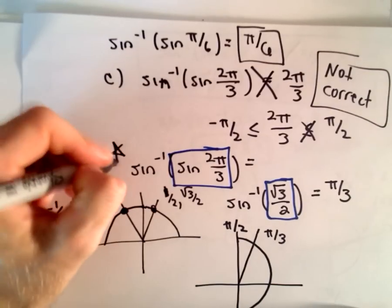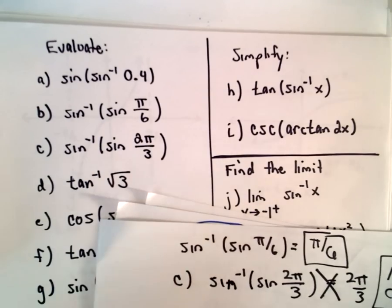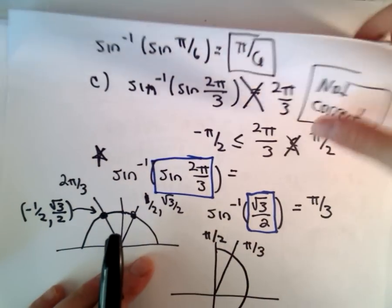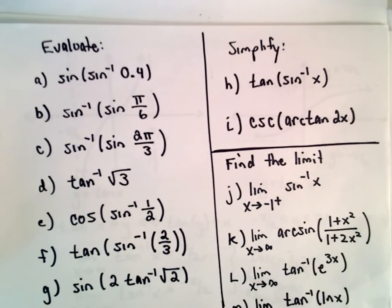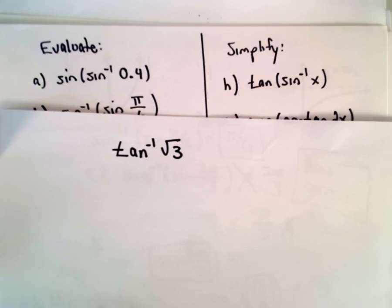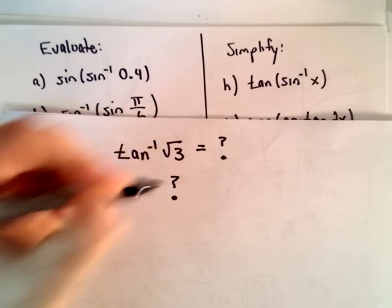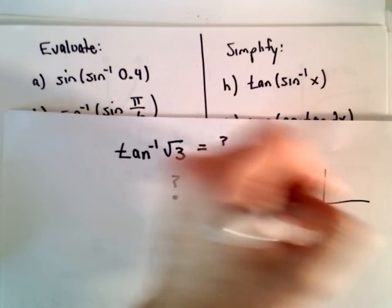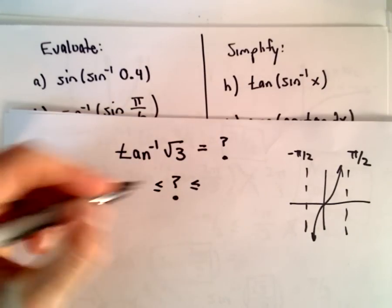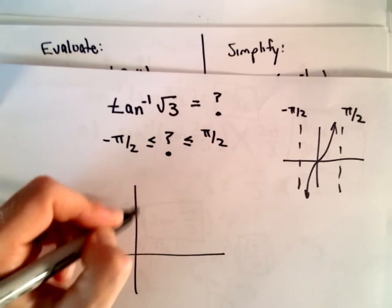This is the example to be extra careful about — you can't just apply cancellation laws thoughtlessly. You have to be careful about the domain. Now let's do one last example: arctangent, or inverse tangent, of square root of 3. There are only a handful of values I can do without a calculator, and it comes down to unit circle stuff. Based on the restriction for tangent, our solution has to lie between negative π/2 and positive π/2 — that's how we made tangent a one-to-one function.